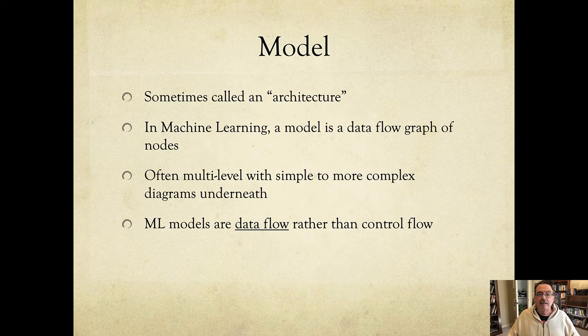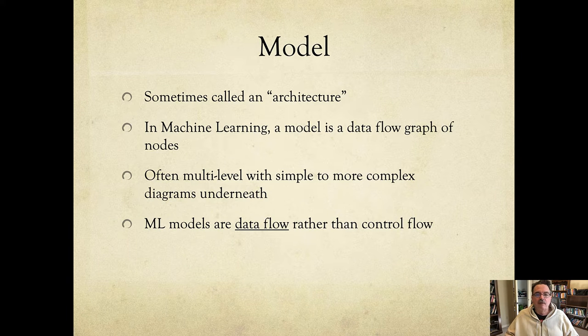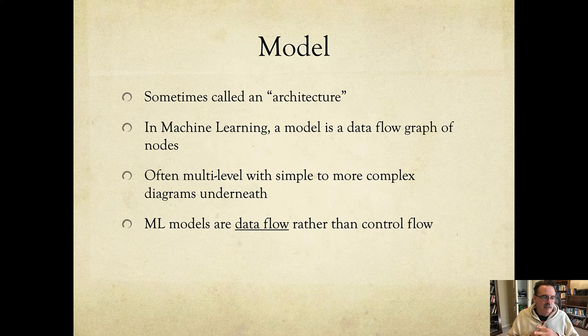In machine learning, the model is a data flow graph or if you like a data flow network of nodes. Those nodes can be different things. At the very lowest level those nodes are neurons, however at higher levels those nodes are functional blocks that take input and produce output. In either case, the model is a data flow model, which is different than a control flow model which is synonymous with most programming languages today with the exception of functional programming.